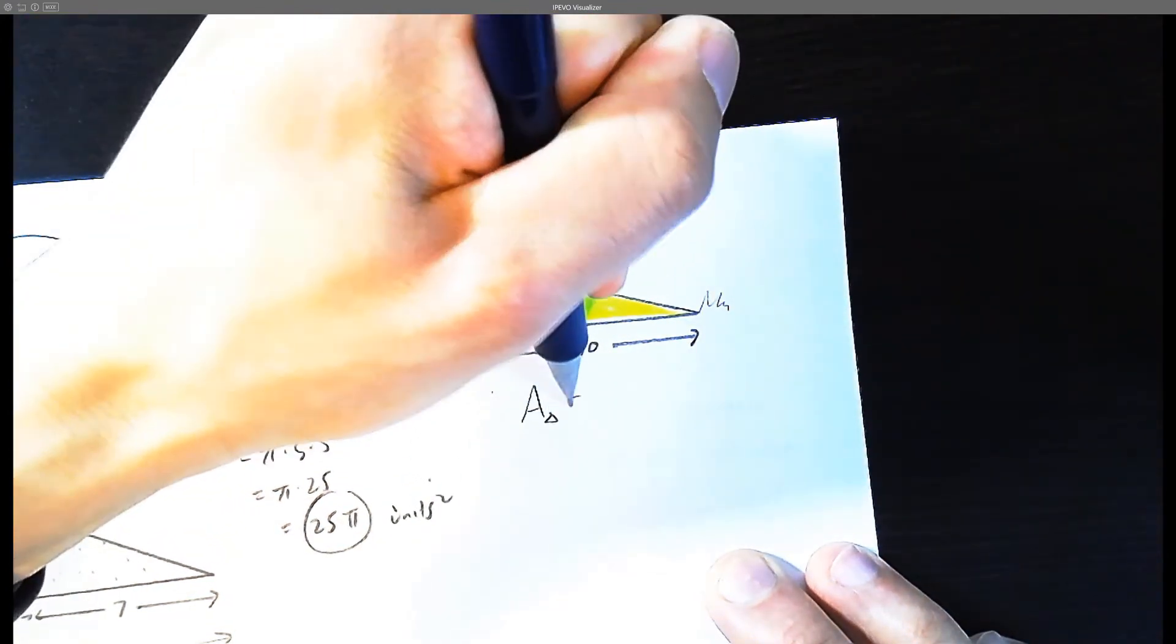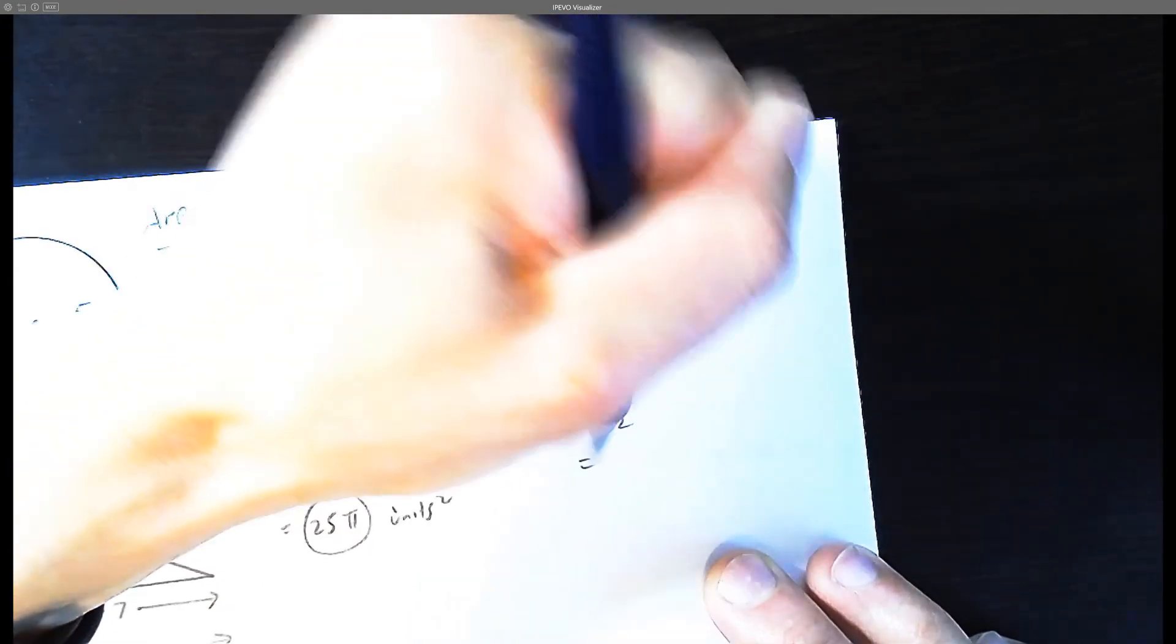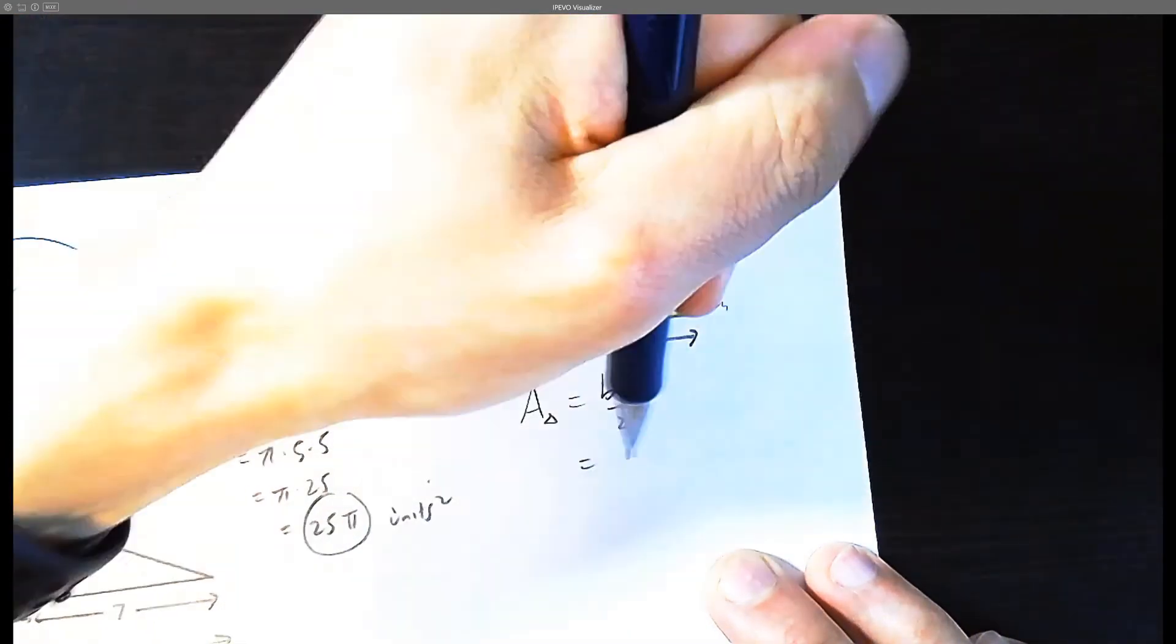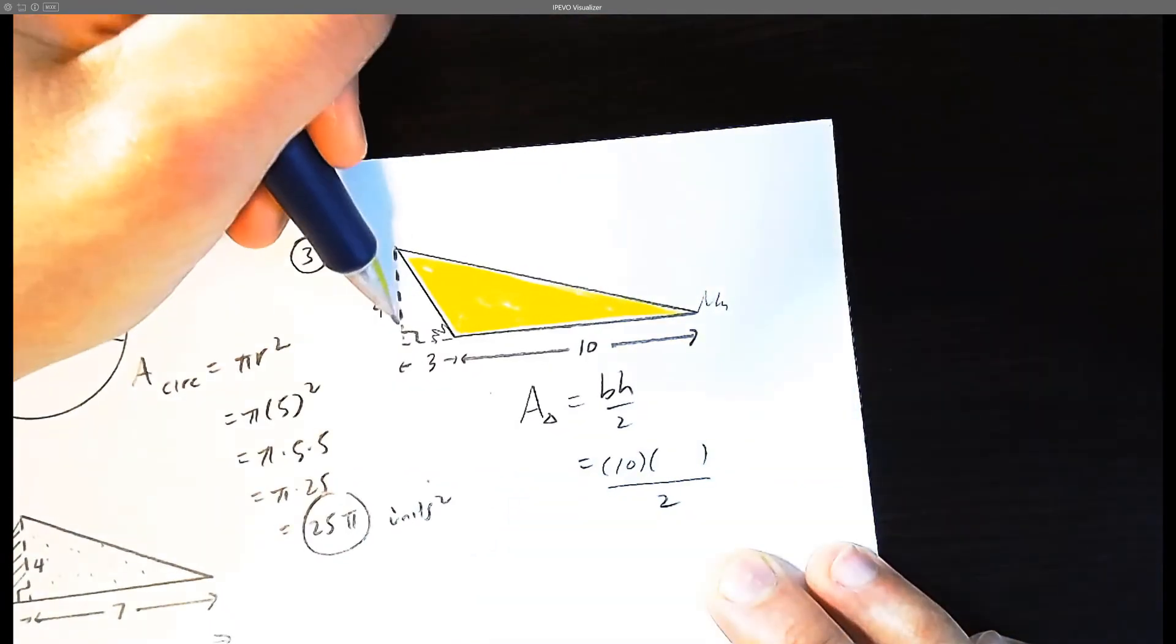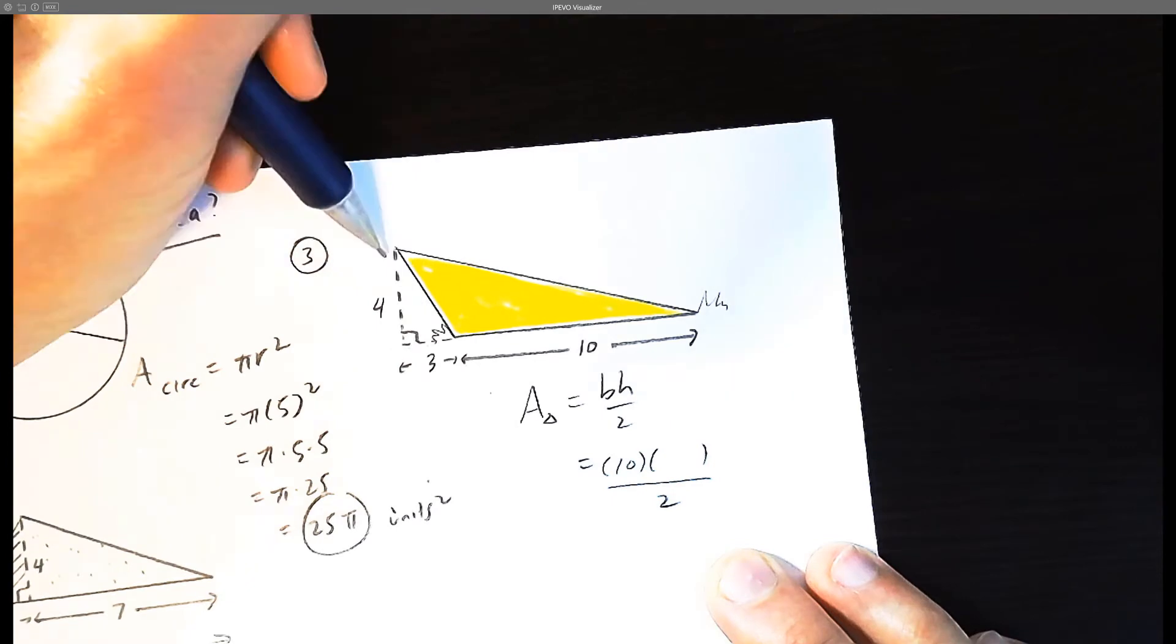So the area of the triangle is base times height divided by 2, which is going to be 10, the part that's actually touching the bottom. And the height is the perpendicular height. Please don't stand leaning. You might fall.